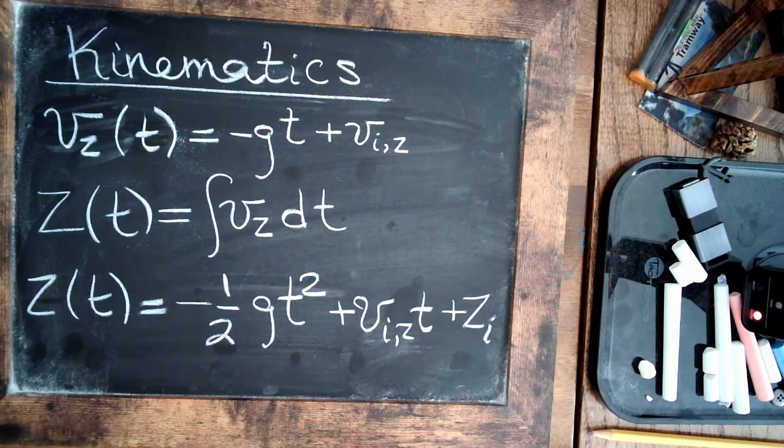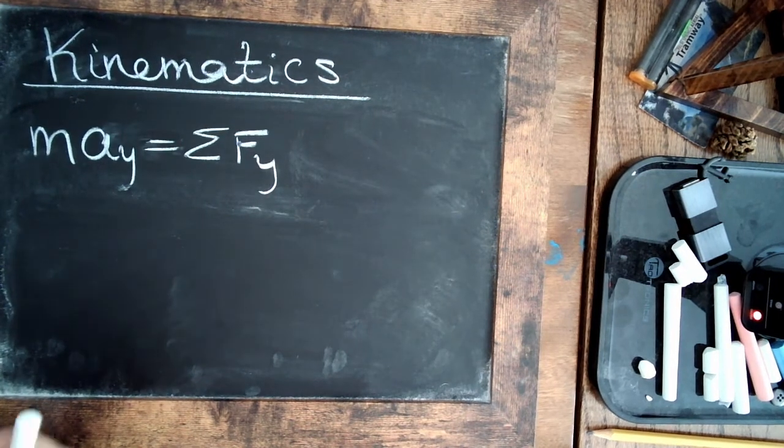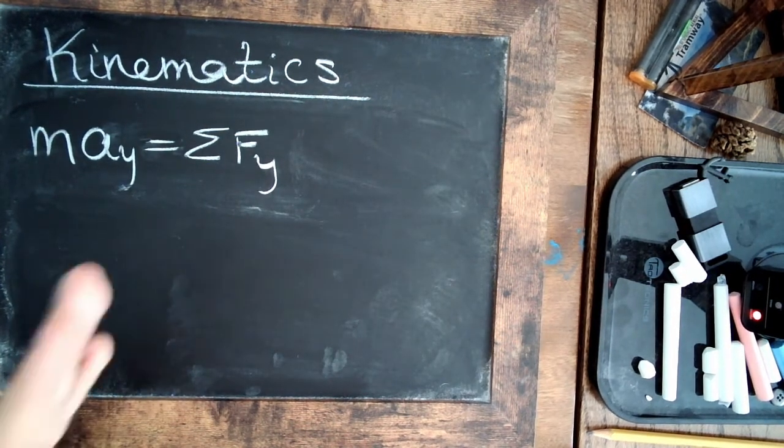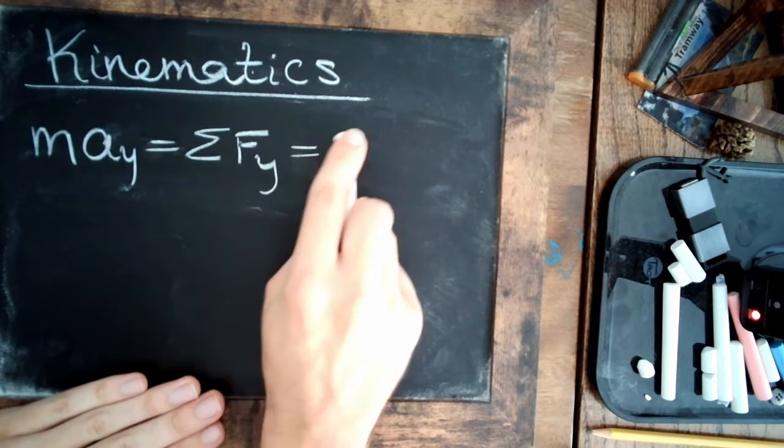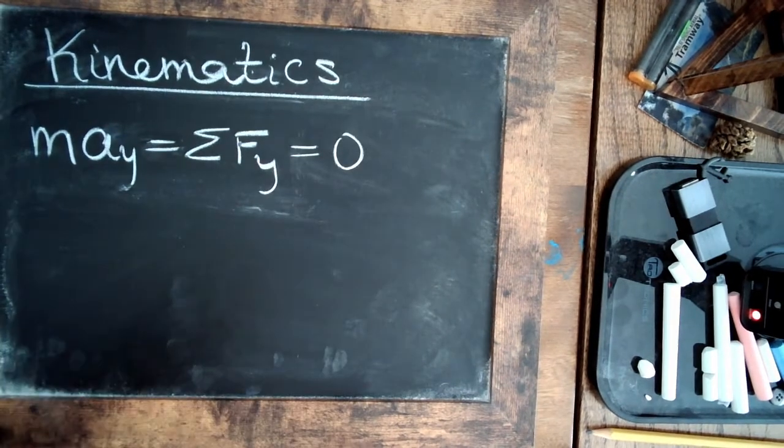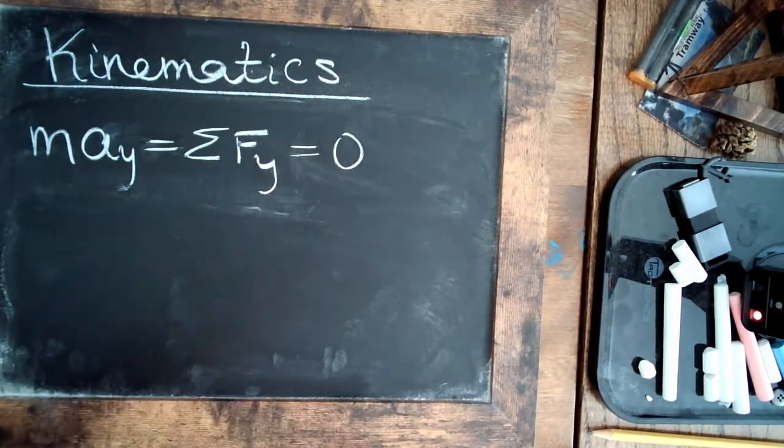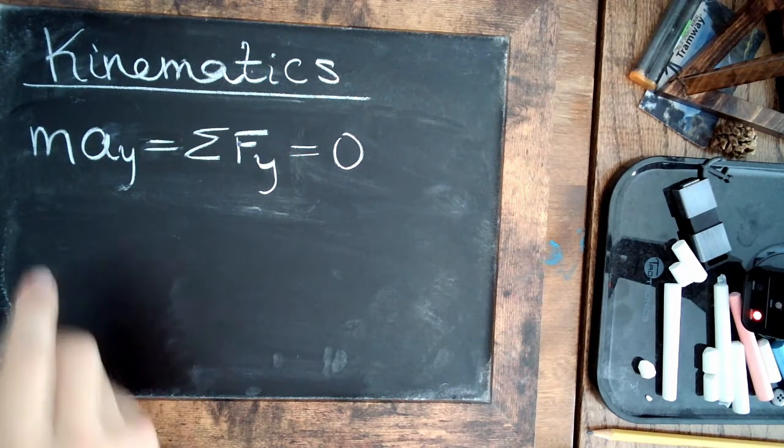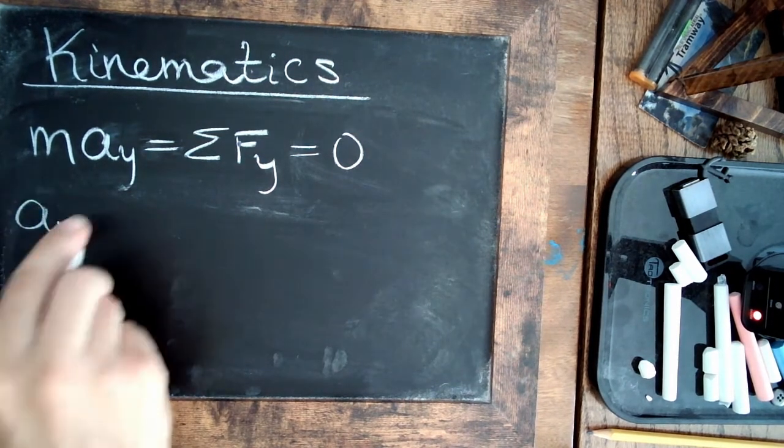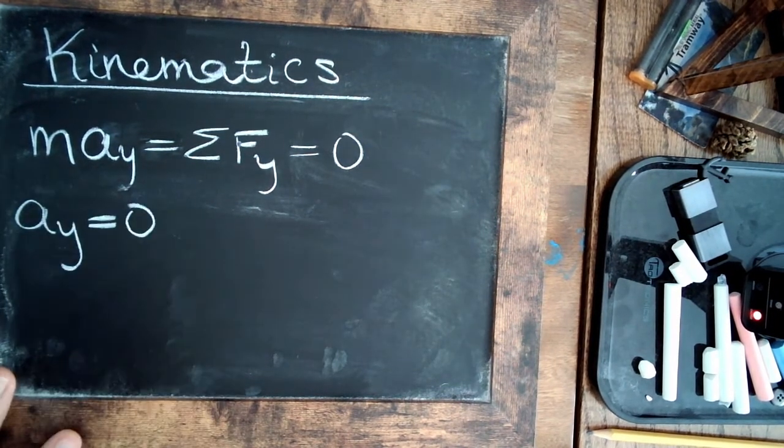But that's it. So let's look at the other two directions. So the y direction is even easier, because there's no forces acting. Nothing is pushing the ball side to side. This is where wind will come in later, for example. But other than that, there's nothing to accelerate the ball sideways. Acceleration is zero.